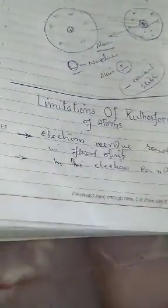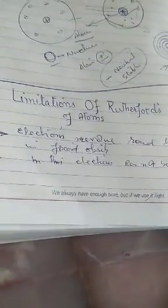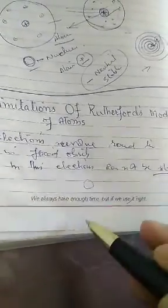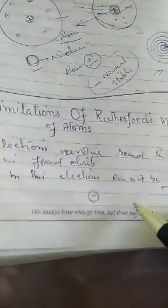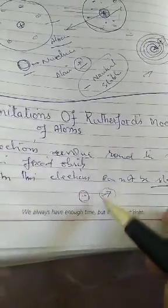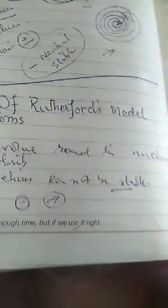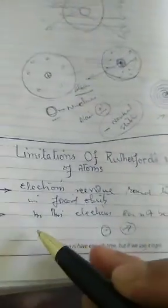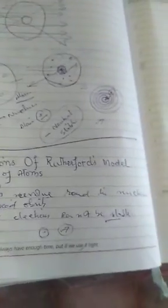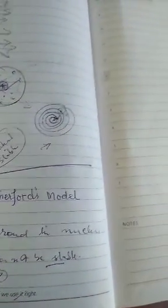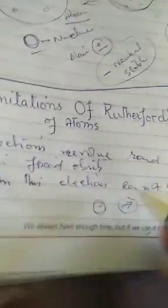So electrons are not stable. They will accelerate. And the atom's moment is not possible. So this is a limitation. And Rutherford's answer is not possible.